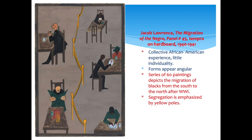The most famous artist of the Harlem Renaissance is Jacob Lawrence. This is Panel 49 from 'The Migration of the Negro,' a series showing what it was like for African Americans who thought the North would be very different from the South. The South had Jim Crow laws, and many thought the North would be better — but when African Americans arrived in the North, they experienced just as deep-seated racism. This is one of 60 paintings depicting the migration of Blacks from the South to the North after World War I. Segregation is emphasized here by a yellow pole, with African Americans on the right and white people on the left.